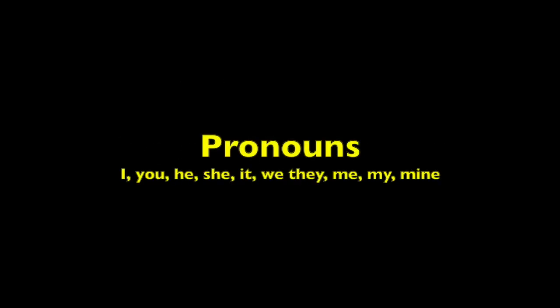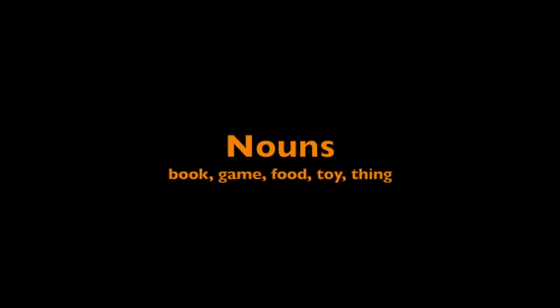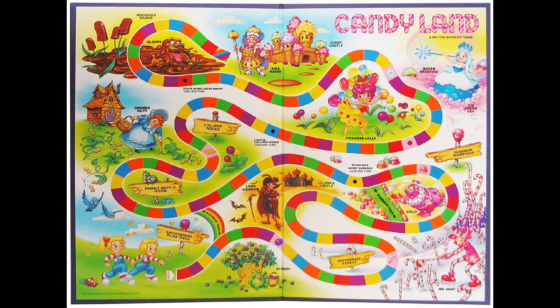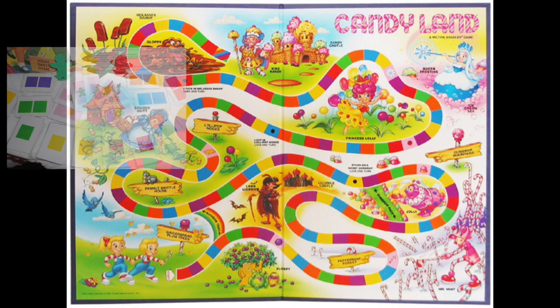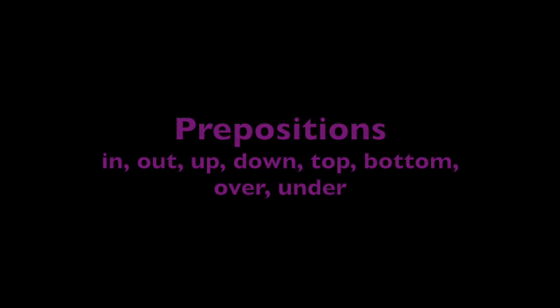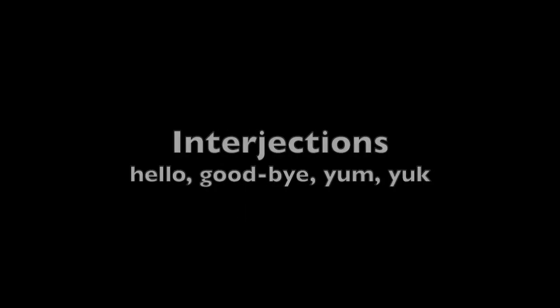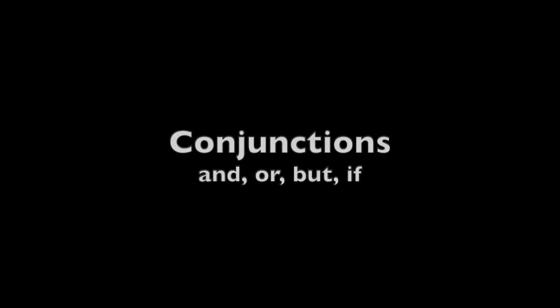Do you see where I'm going with this? You can easily use Candyland to practice pronouns, verbs, adjectives, and nouns. What about the purple and red spaces on the Candyland game board? When you draw a purple or red card, I like to use purple for prepositions and red for question words. But you can use those colors for any other part of speech such as adverbs, interjections, determiners, or conjunctions.